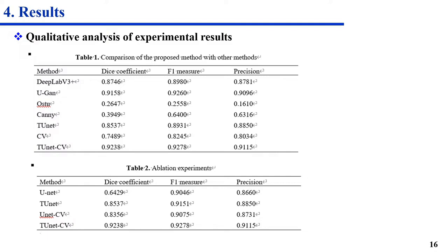By comparison, it can be seen that the proposed model in this paper performs better in segmentation effects. In the qualitative analysis of experimental results, Table 1 compares the results of the TUNET-CV model and the popular segmentation models on the metallographic dataset of bearing steel. Compared with other methods, the TUNET-CV model achieved the highest test coefficients by F-measure and precision. In order to verify the effectiveness of the TUNET-CV model, the controlled variable method is used to conduct ablation experiments. In Table 2, the U-Net model, TUNET model, U-Net CV model, and TUNET-CV model are tested on the bearing steel metallographic dataset. The F-measure and precision values of TUNET-CV model reached the highest, effectively proving that the transformer module and CV model introduced in the fine segmentation stage can effectively improve the segmentation results.